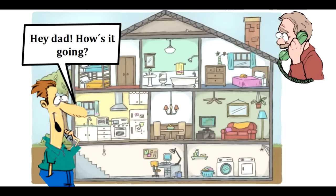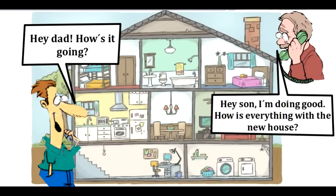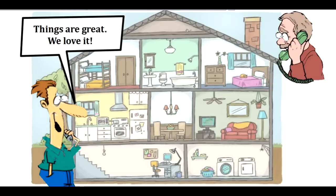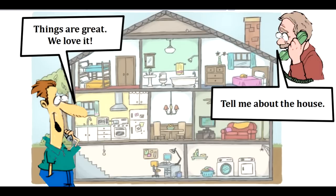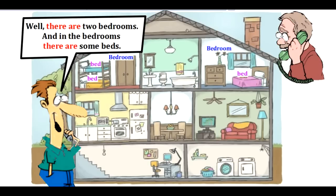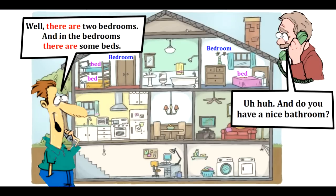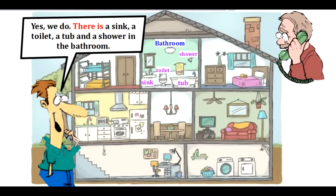Hey dad, how's it going? Hey son, I'm doing good. How is everything with the new house? Things are great, we love it. Tell me about the house. Well, there are two bedrooms, and in the bedrooms there are some beds. And do you have a nice bathroom? Yes, we do. There is a sink, a toilet, a tub, and a shower in the bathroom.